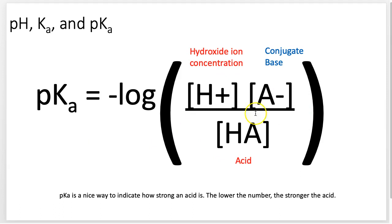pKa is a more helpful number for us, especially when we're dealing with proteins. pH tells us how many hydrogen ions are floating around in the environment. But what we really want to look at is the acid and the base — pKa gives us one solid number to tell us whether or not a molecule is going to have a hydrogen ion attached or not.